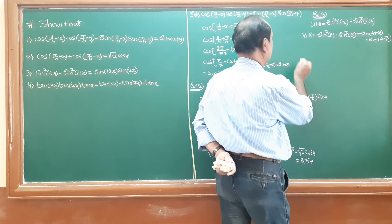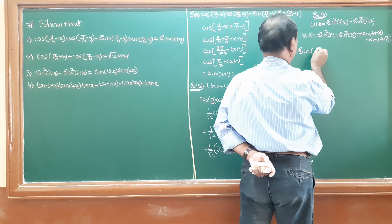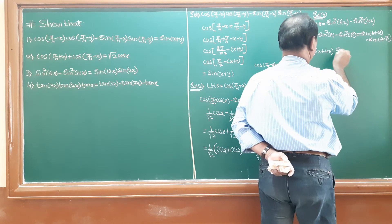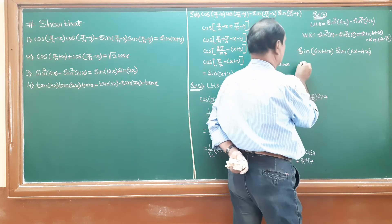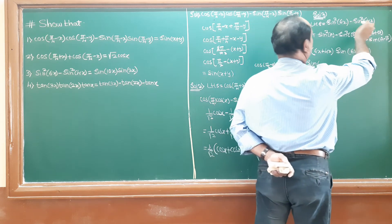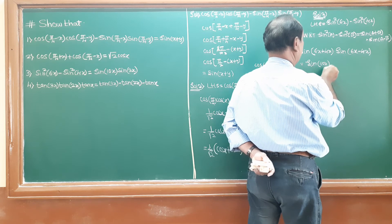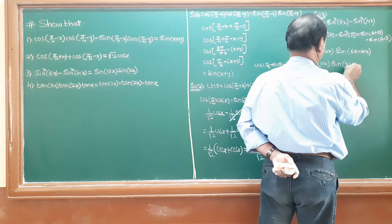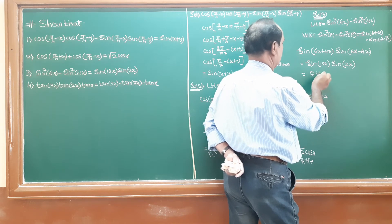So applying this formula, sin²(6x) minus sin²(4x) equals sin(6x + 4x) · sin(6x minus 4x), which equals sin(10x) · sin(2x). LHS equals RHS, and the problem is proved.